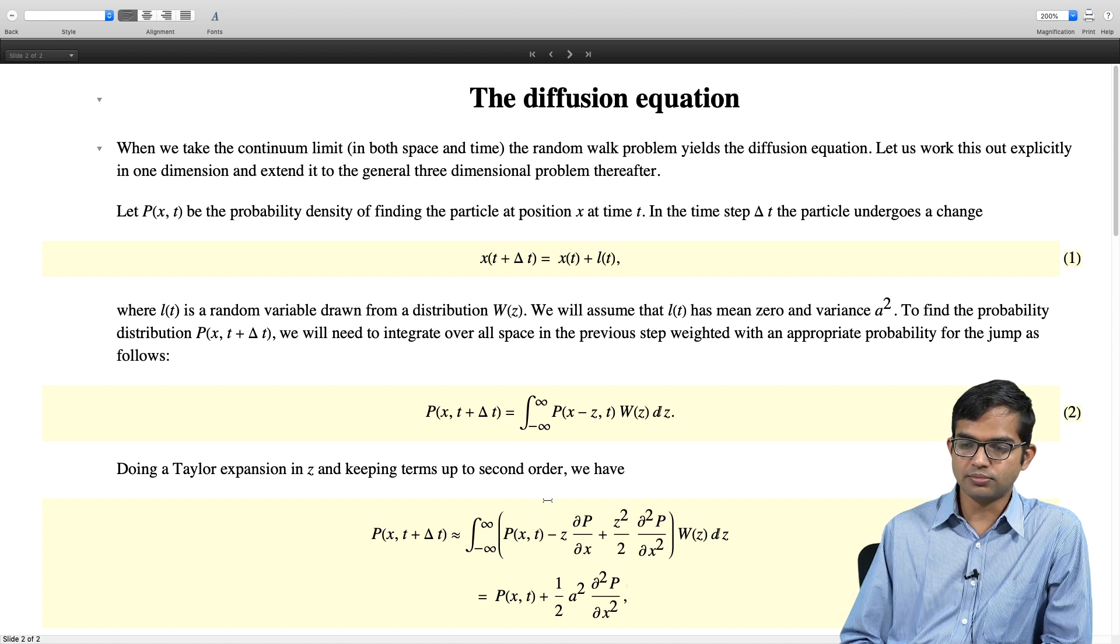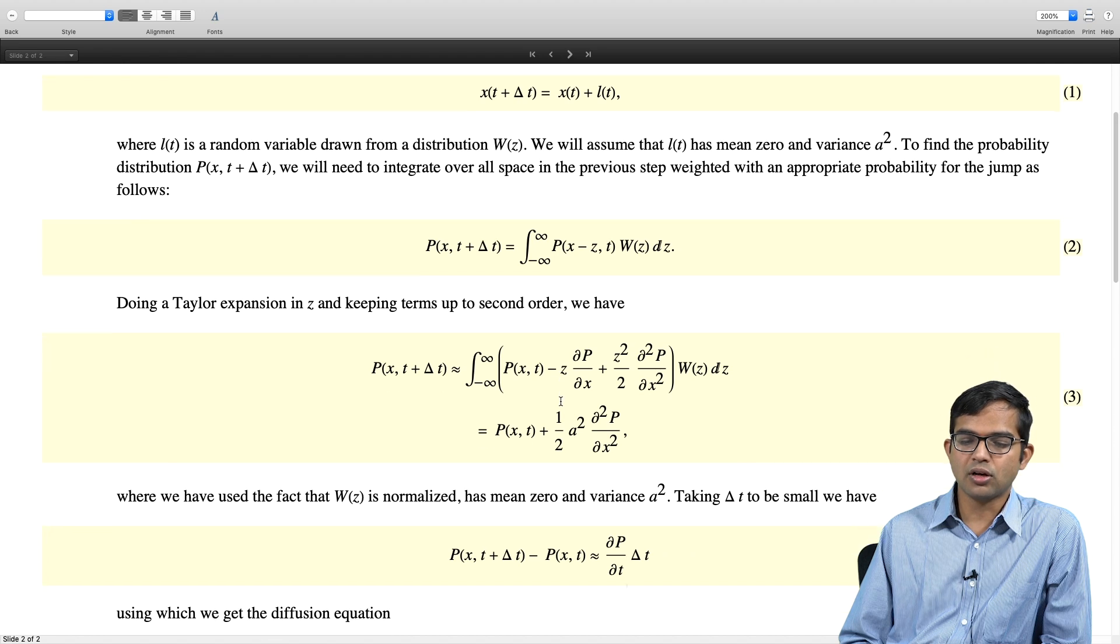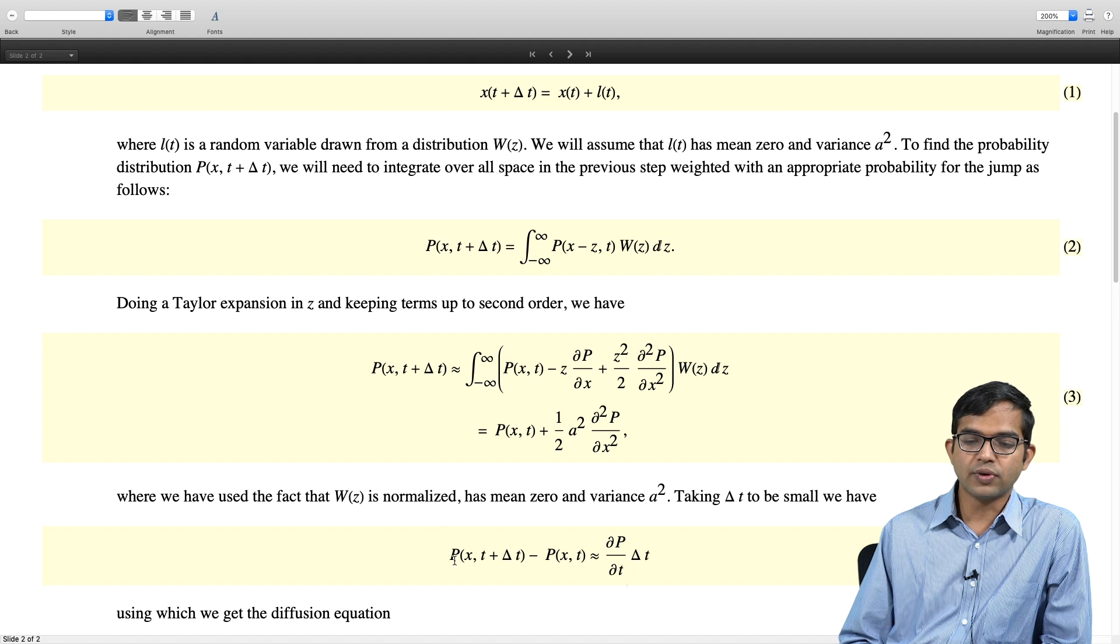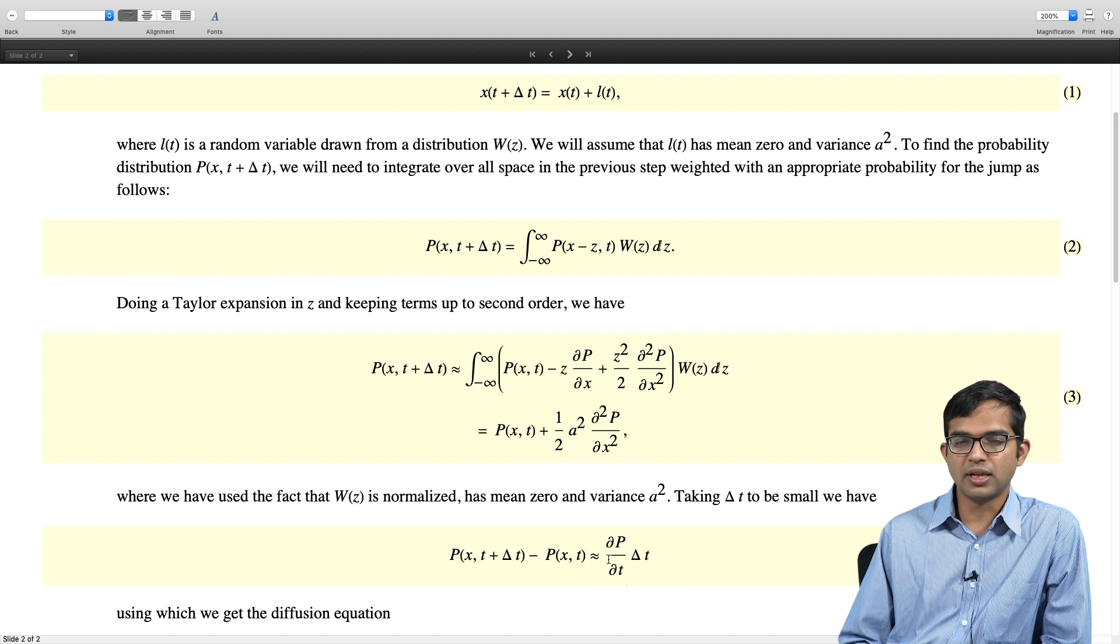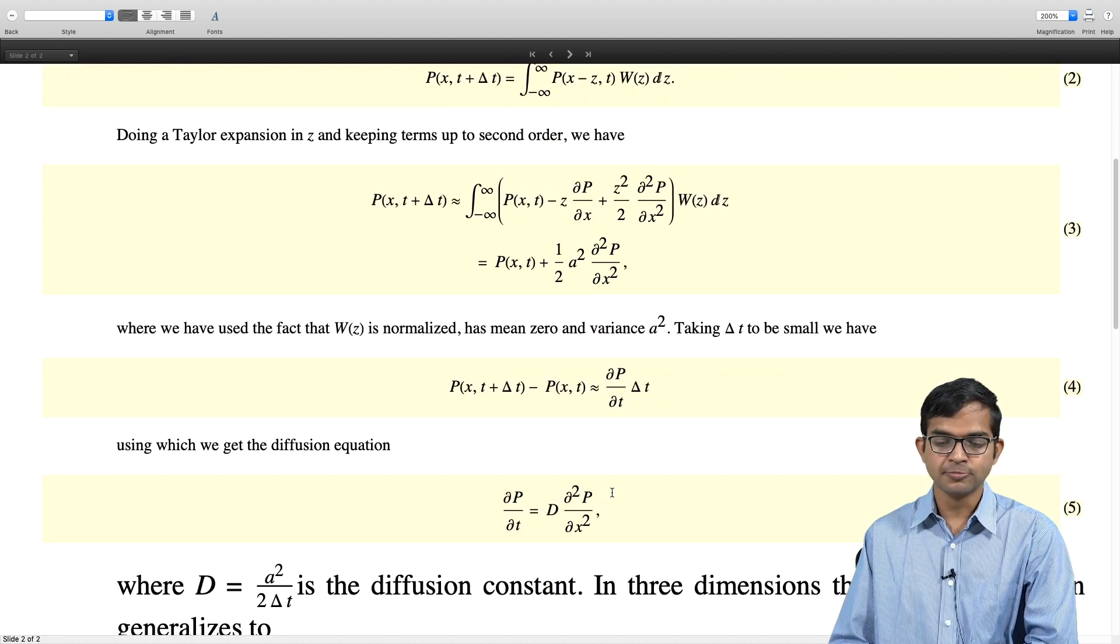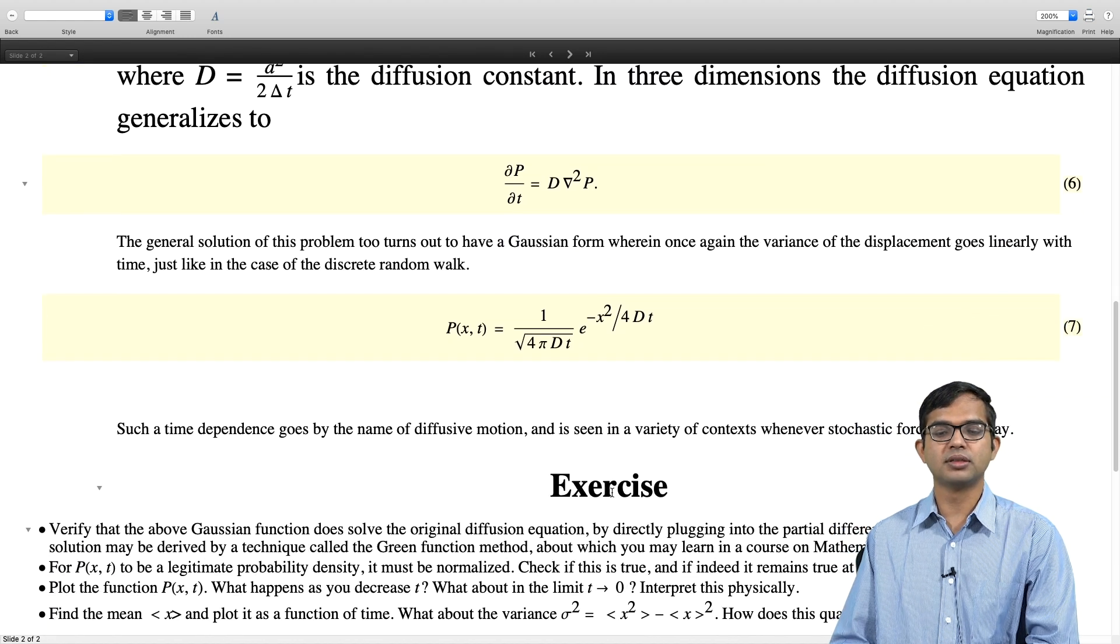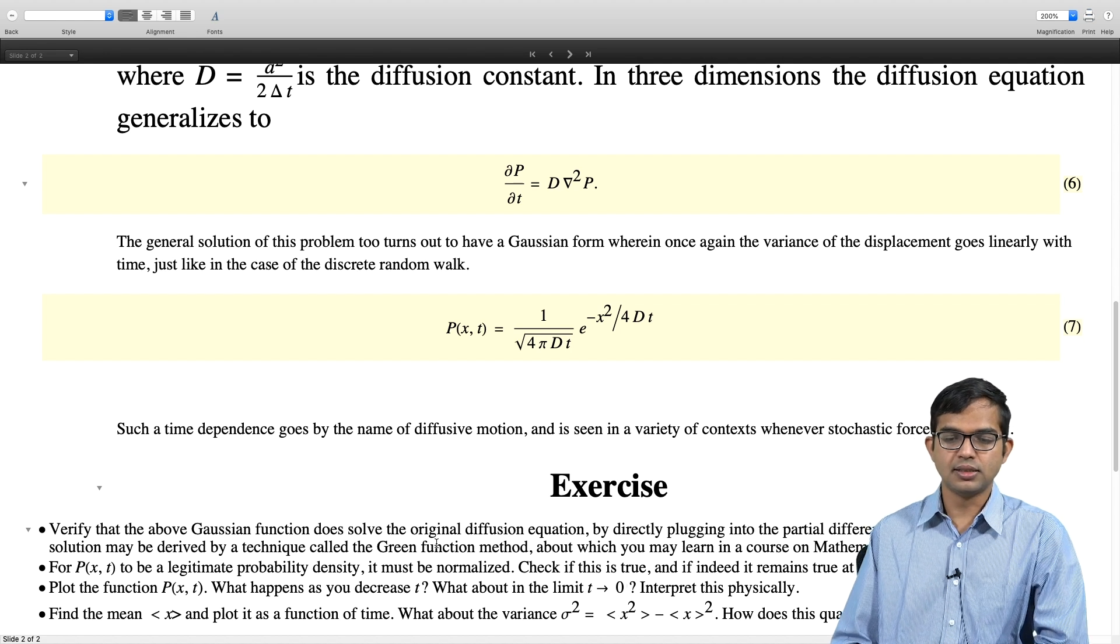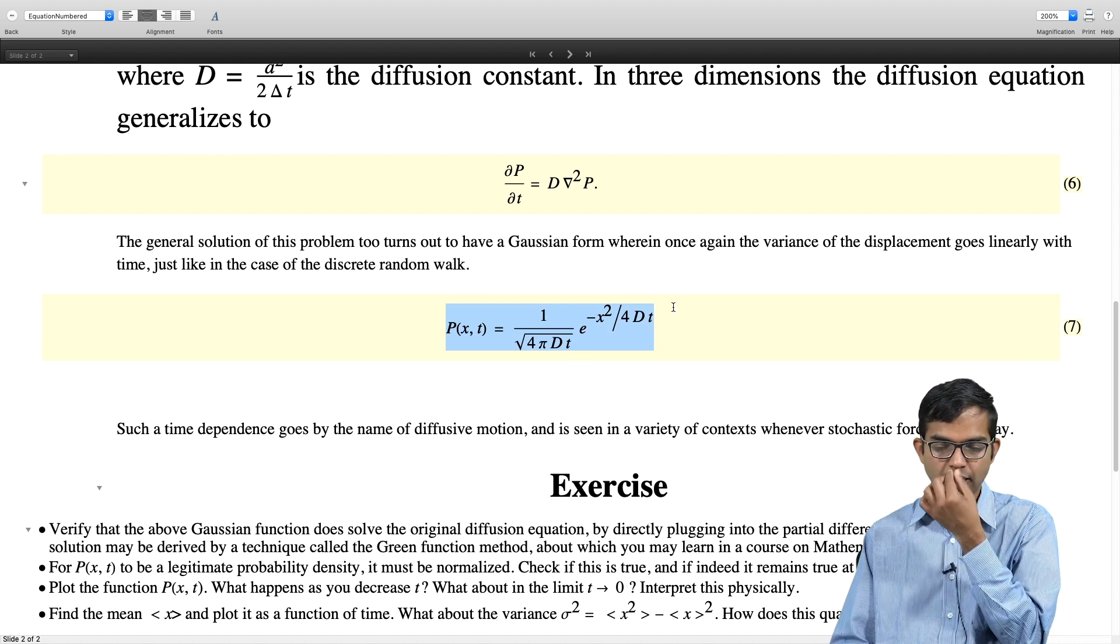Then we do a Taylor expansion. One of these terms will drop out because we have chosen L(t) to have mean 0. Then we make contact with an alternate way of getting at P(x,t+delta t), which can be thought of as P(x,t) plus dou P by dou t delta t, using which we get the diffusion equation in 1D. Then we generalize this to get a diffusion equation in 3D. And then I claim that the general solution for the diffusion equation is just the Gaussian of this form.